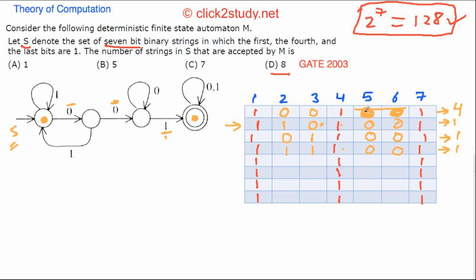We've now covered all four possibilities for positions two and three (00, 01, 10, 11). The first case gave four strings, and the remaining three cases gave one string each. So the total number of strings in S accepted by M is 4 + 1 + 1 + 1 = 7. That is the correct answer.